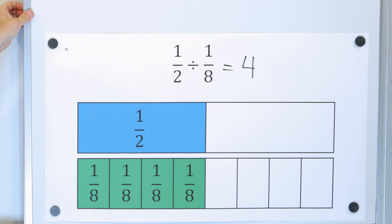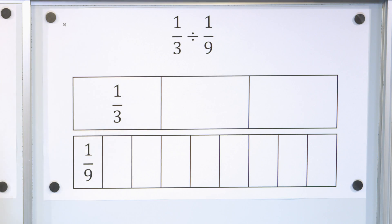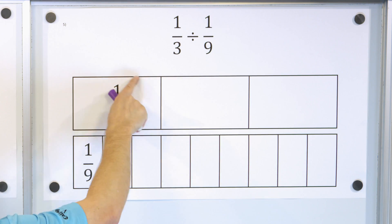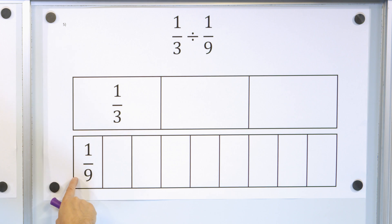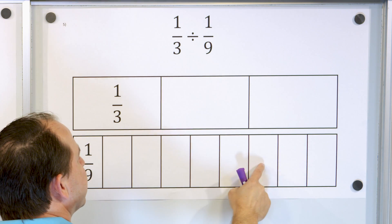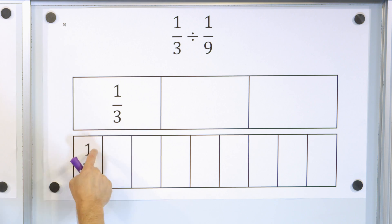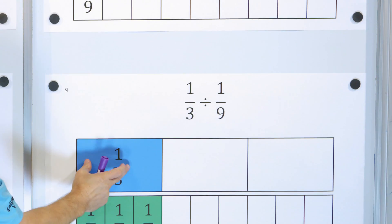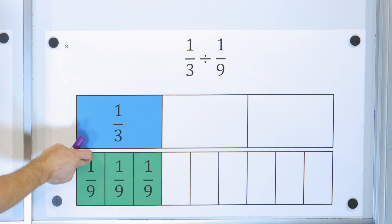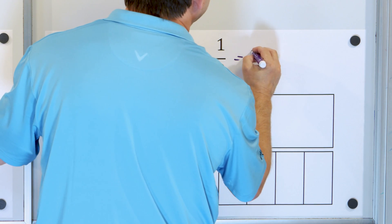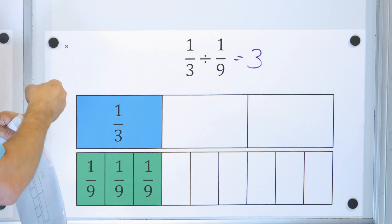Now here's our very last problem: 1 third divided by 1 ninth. 1 third is taking a candy bar, cutting it into three pieces, and only having one. 1 ninth is cutting it into nine pieces and only having one. How many times can 1 ninth go into 1 third? You can see that 1 ninth fits 1, 2, 3 times exactly. So the answer is 3 — exactly 3 times.